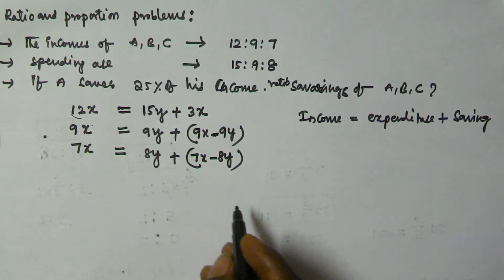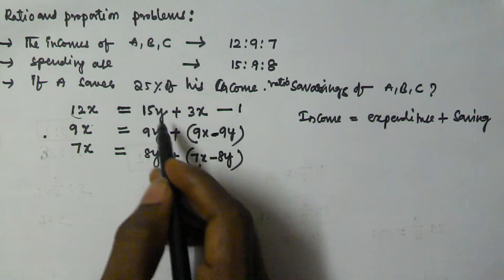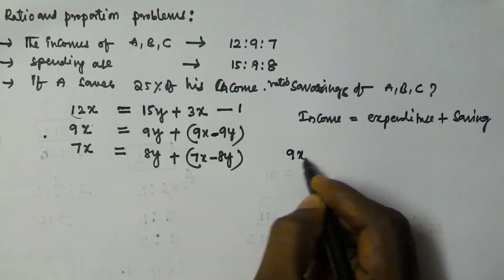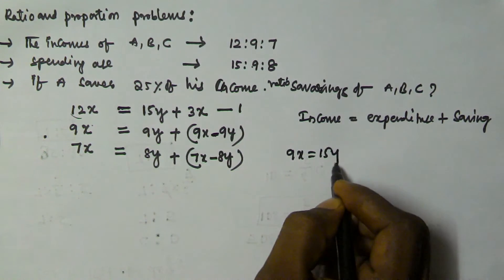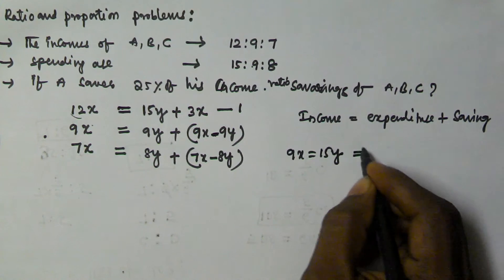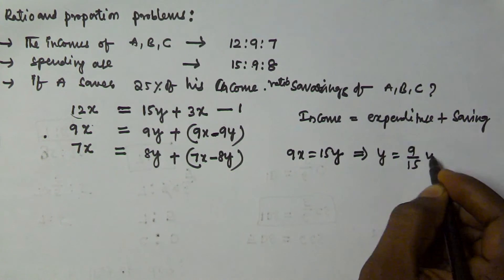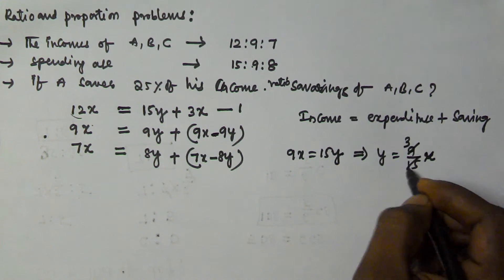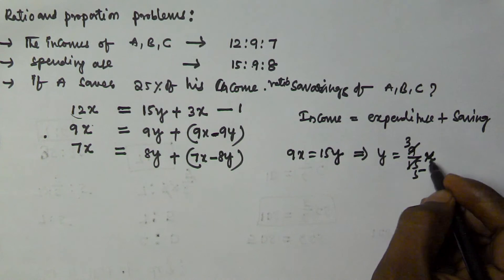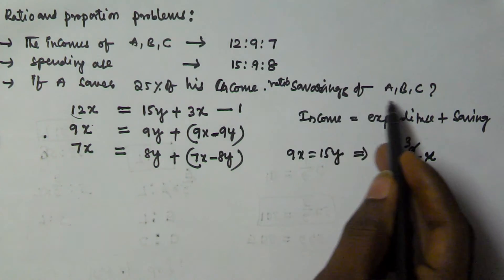From the first equation: 12x minus 3x equals 15y, so 9x equals 15y. Solving for y: y equals 9/15 of x, which simplifies to y equals 3/5 of x.